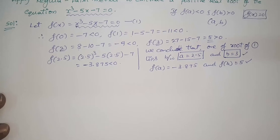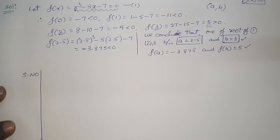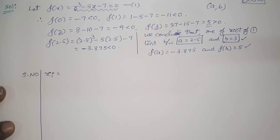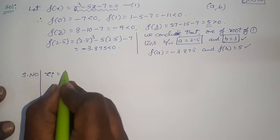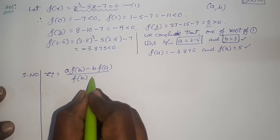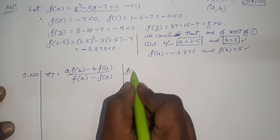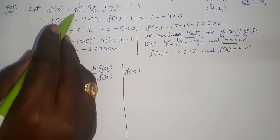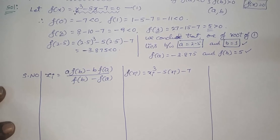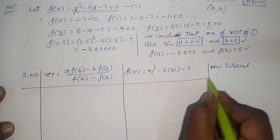Now we find successive approximations using Regula Falsi in tabular form. The formula is: xᵢ = [a·f(b) - b·f(a)] / [f(b) - f(a)]. Then we compute f(xᵢ) by replacing x with xᵢ in the equation, giving xᵢ³ - 5xᵢ - 7. The last column is the new interval, which we identify to get the next better approximation.